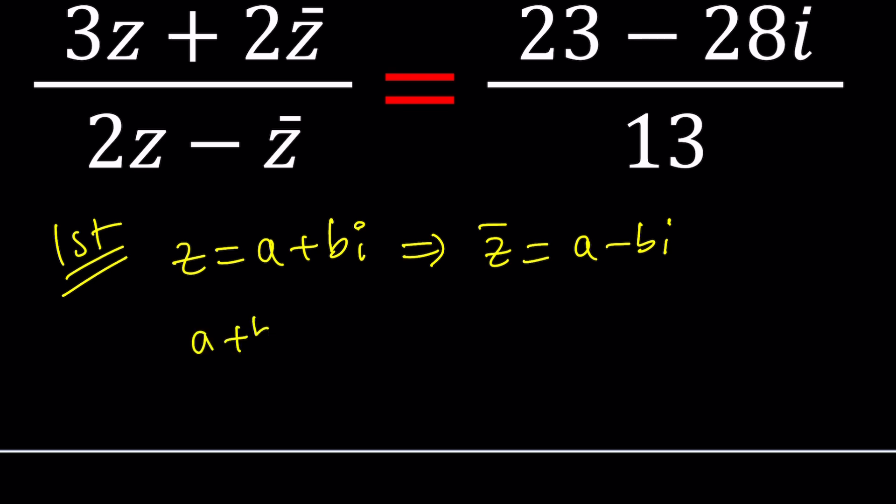If you multiply two complex numbers a plus bi and a minus bi you get sum of two squares. Something to remember because sum of two squares can be factored in the complex world.